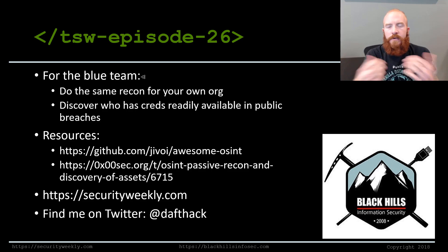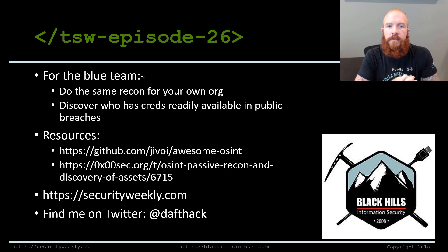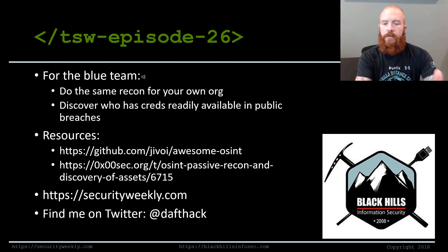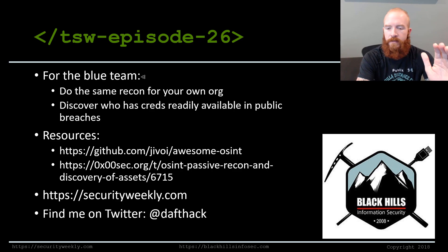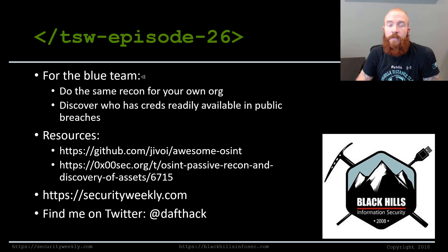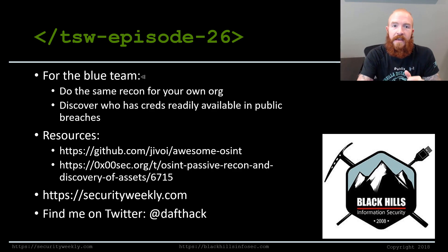For the blue team, I always recommend doing the same recon an attacker would do about your own organization — figure out what contact lists can be developed from open source intelligence, and discover who already has credentials available in public breach dumps. If someone's credentials are being reused to access your organization, that's a very bad day. I've also included a GitHub repo called Awesome OSINT which has a huge list of tools, plus a blog post on external attack infrastructure. Hope you enjoyed this episode — catch you next week.